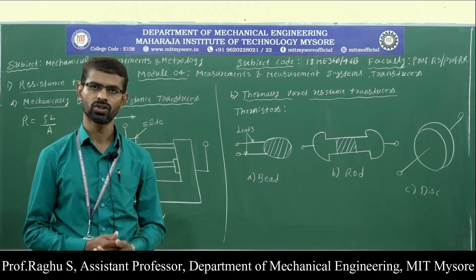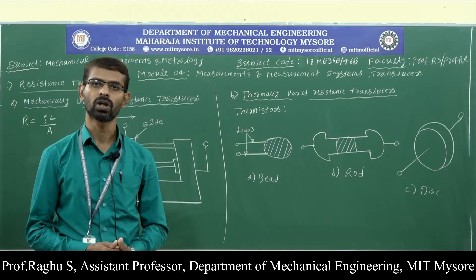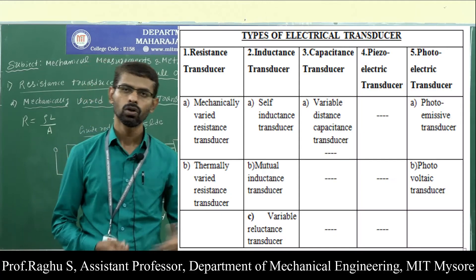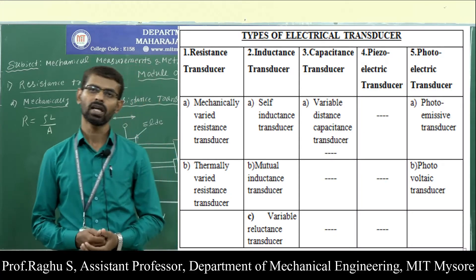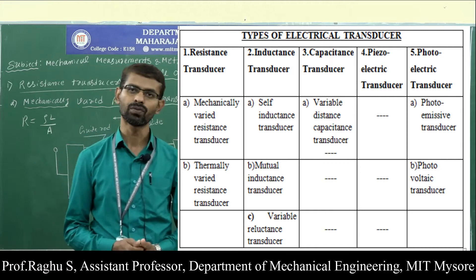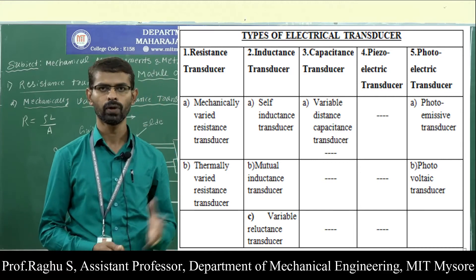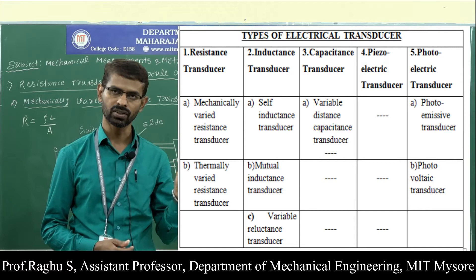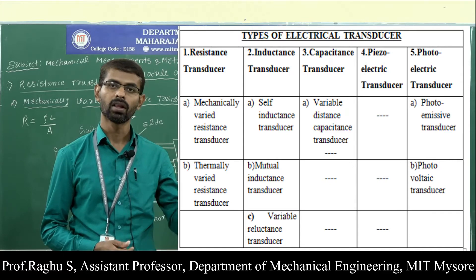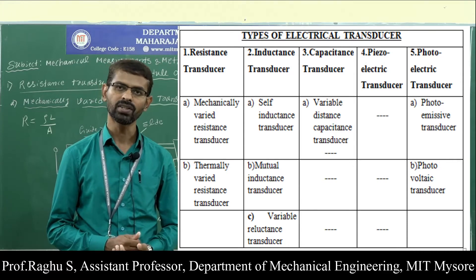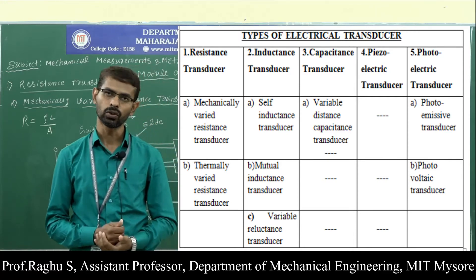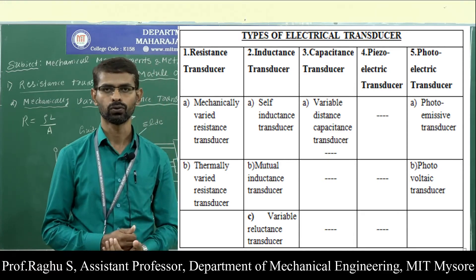In this session, we will discuss different types of electrical transducers and the working principle of electronic transducers. The table shows the different types of electrical transducers. We have mainly five types: resistance transducer, inductance transducer, capacitance transducer, photoelectrical transducer, and physioelectrical transducer.